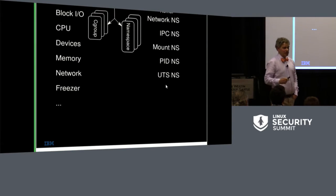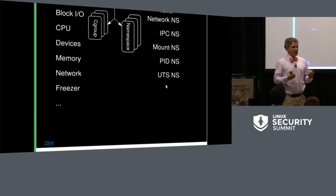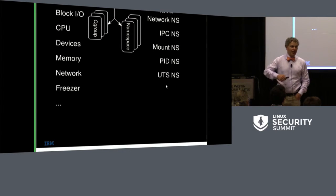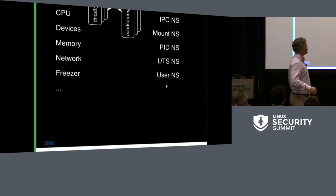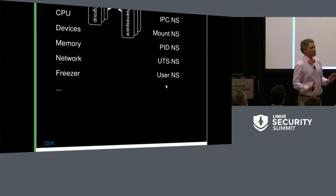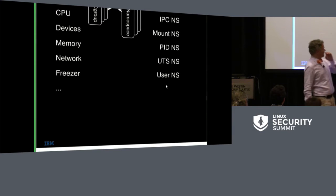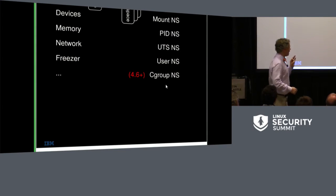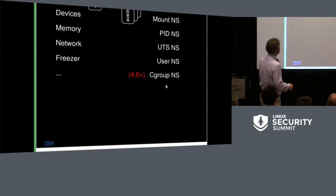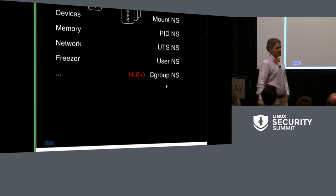The UTS namespace virtualizes the hostname and domain name — necessary to bring up an NFS server inside a container, since NFS server and client use kernel primitives for hostname and domain name. Then we have the user namespace, which got criticized this morning. I'd like to tell you why you should love user namespaces rather than fear them. The cgroup namespace, a recent 4.6 feature, exists to virtualize certain cgroup information, and in the long run we hope it will enable unprivileged cgroups — though there's about half a decade of arguing ahead.